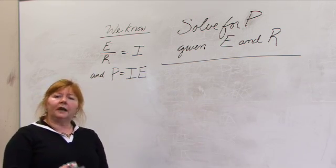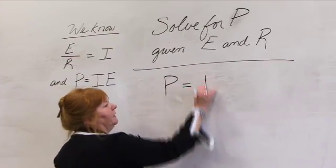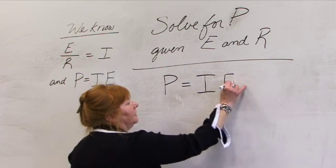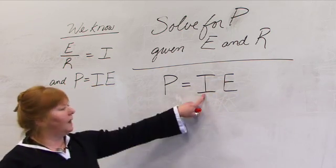As well as P equals I times E. So right now, looking at what we know, we're asked to solve for P given I times E. But what's missing for us is I, current.